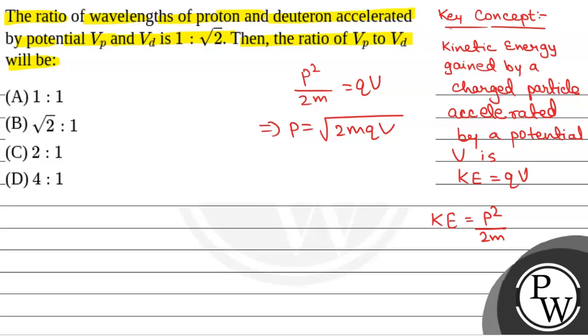Now, we know that de Broglie wavelength lambda is equal to H by P. So, P is equal to H by lambda. Thus, we will have lambda is equal to H by root over 2m QV.